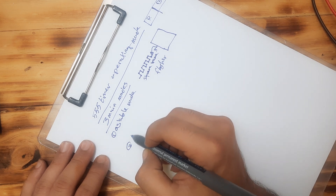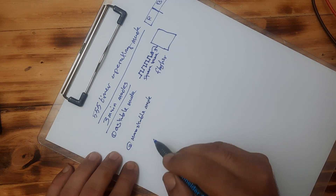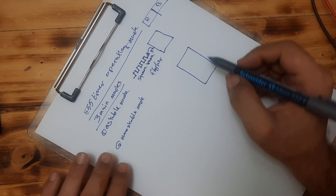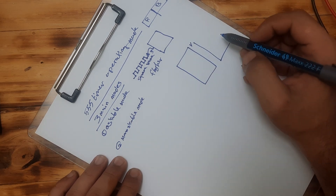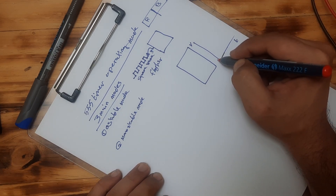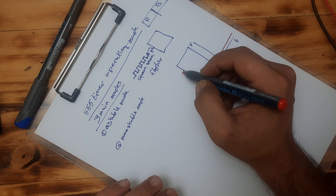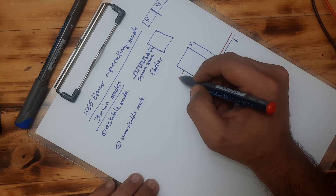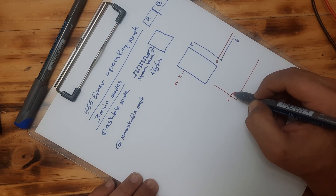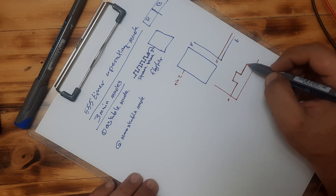The second mode is called monostable. In monostable mode, the normal output of the 555 timer can be set to zero. So let's say the output is always zero — unless we do something to the trigger input, which is pin number two. In that case, the output will go high and then return to zero.